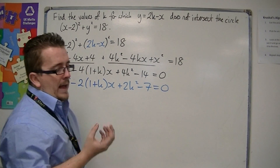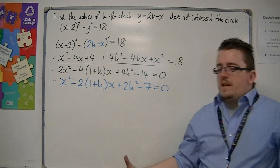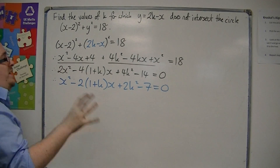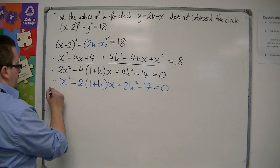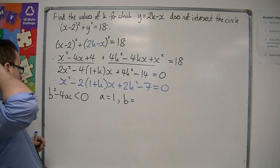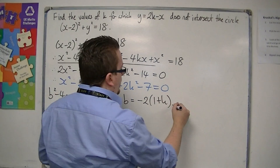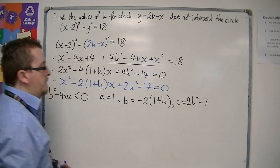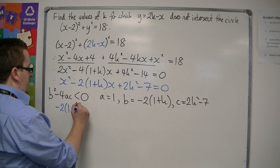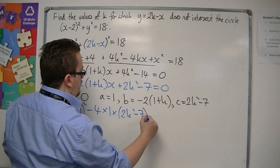Now, because we're looking at whether a straight line and a circle intersect or not, I'm relating this back to the discriminant, as introduced in a previous video. If there is no intersection, the discriminant must be less than 0, because we don't want any solutions. So a is 1, b is minus 2 lots of (1 plus k), which is the coefficient of x, and c is 2k squared minus 7.